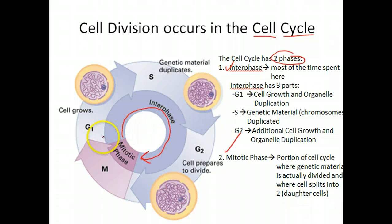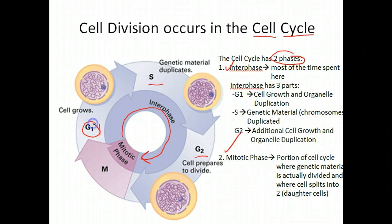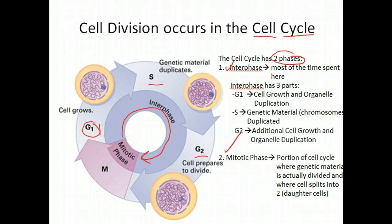What do you do in interphase? There are three sub-phases. The first one is called G1, or growth one phase. In this phase, the cells are going to be getting larger and duplicating organelles.